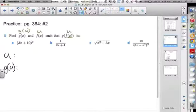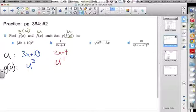All right. Who has an answer for A? Mia? U is 3x plus 10. G of U is U cubed. Very good. How about our second one, B? U is 2x plus 4. And G of U is U to the negative 1. Or 1 over U. How about C? U is X squared minus 3x. And G of U is U to the 1 half.